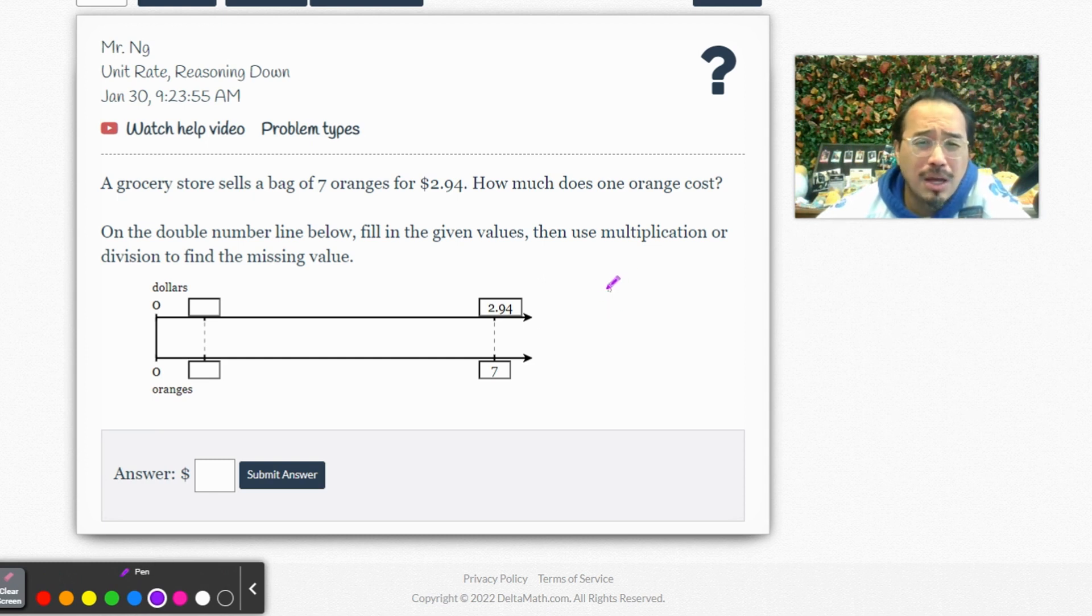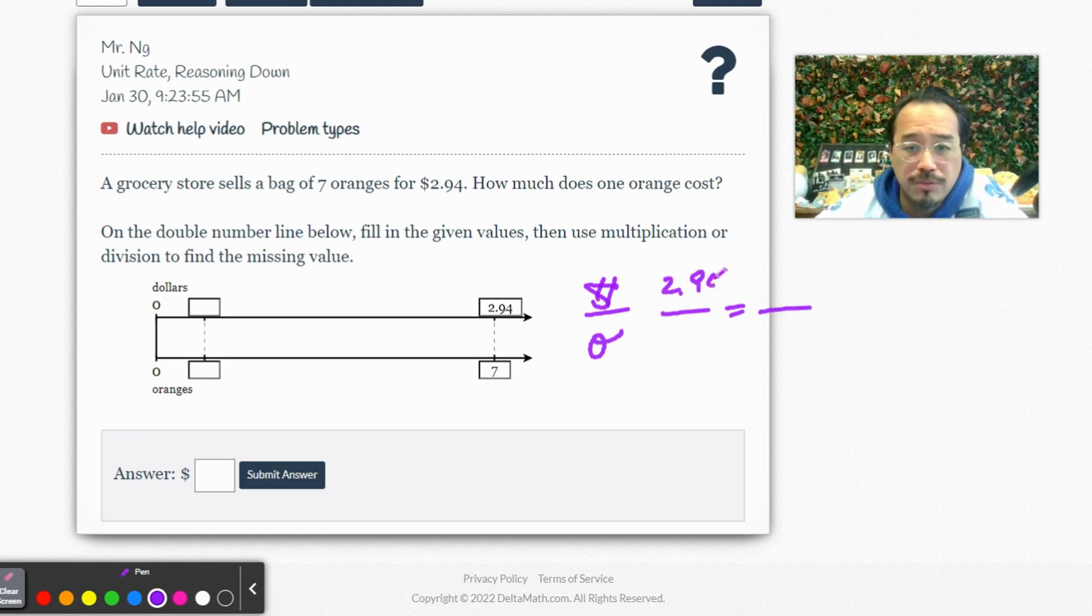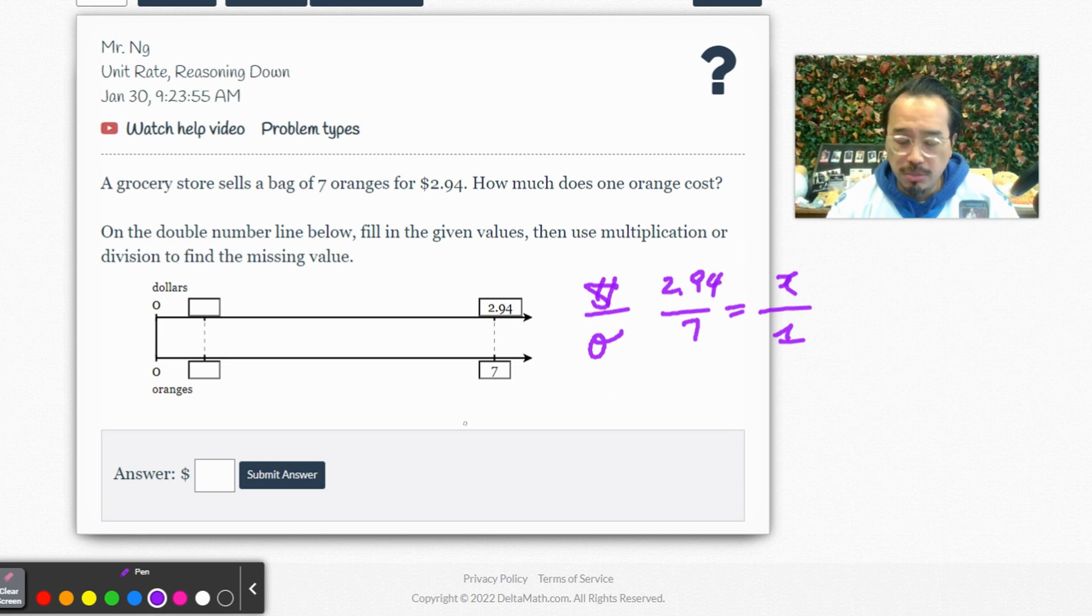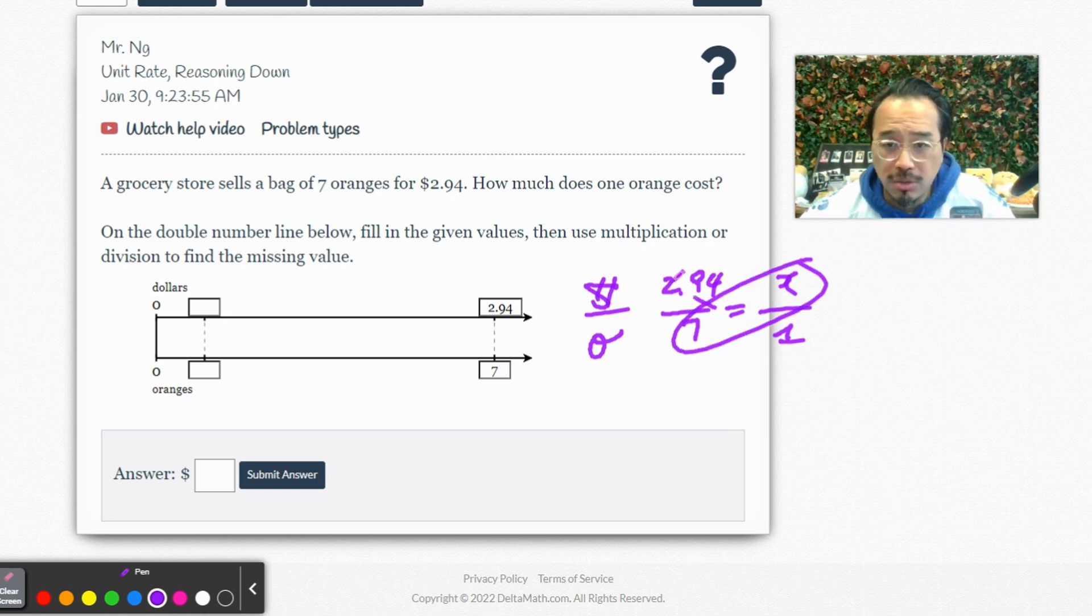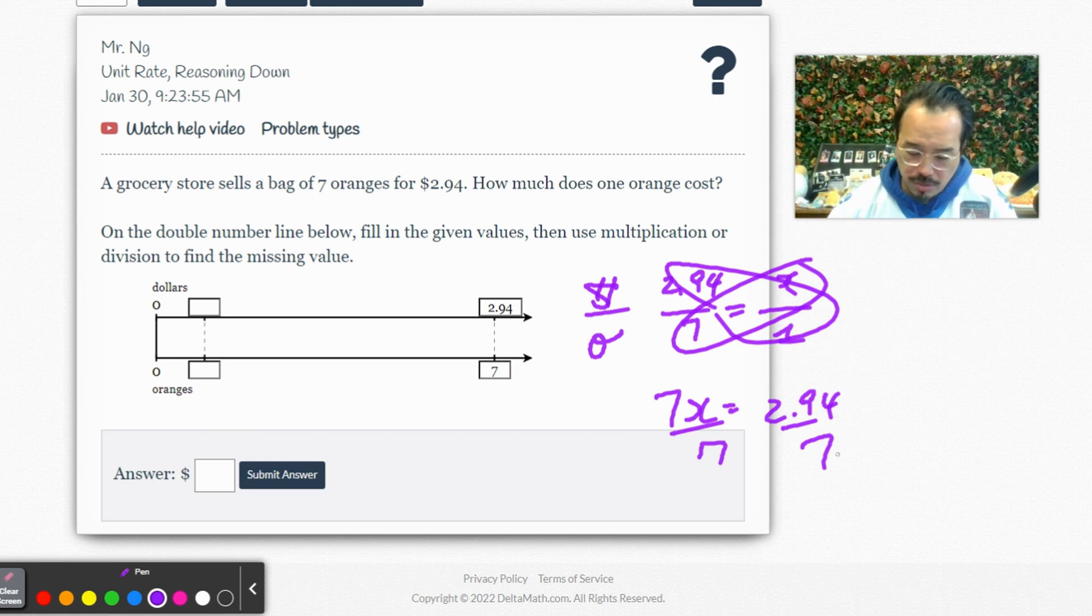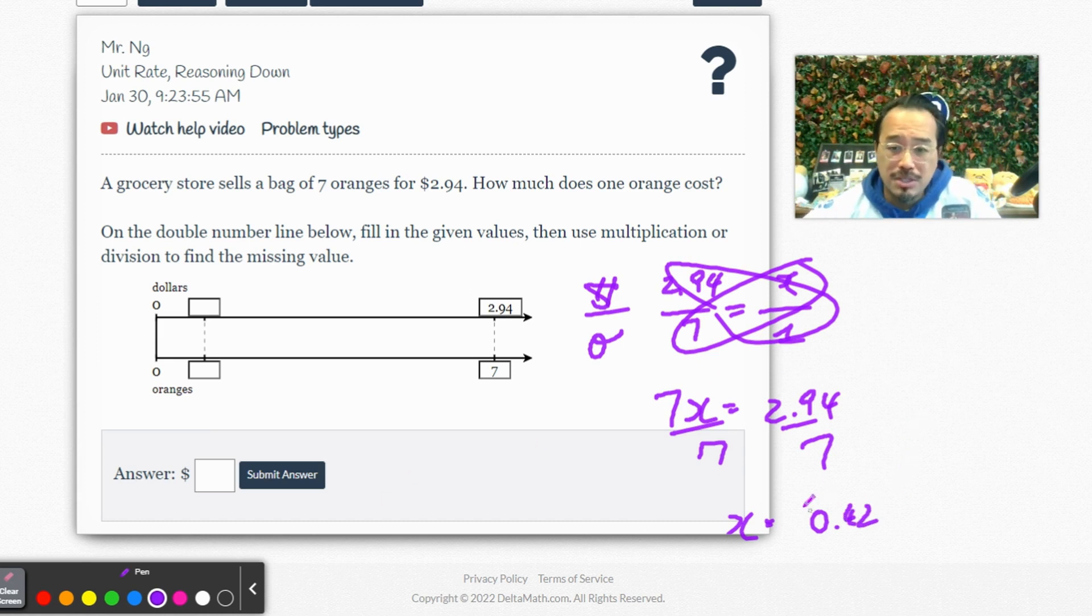So here, what are we doing? Dollars per orange, right? Dollars per orange. So let's see, $2.94 for seven oranges, how much for one orange? Cross multiply divide. Let me grab my calculator. So 1 times 2.94 is 2.94. Make sure you check what you put into your calculator because sometimes your input might be incorrect. Divided by 7 - 7x divided by 7. So in other words, if you do this cross multiply, 7x gives you 2.94, divide both sides by 7. Enter: 0.42. It's 42 cents per orange.